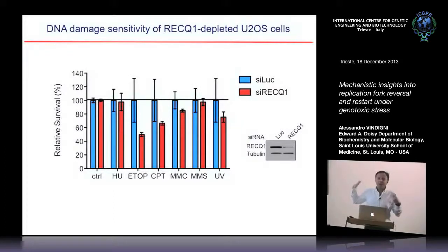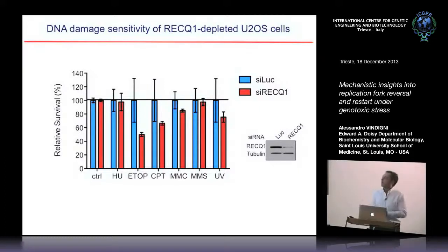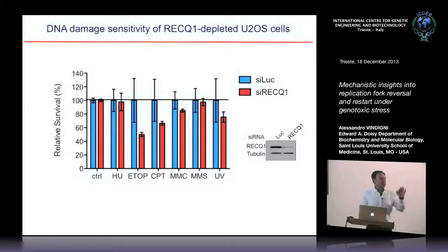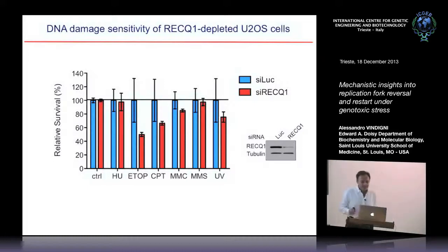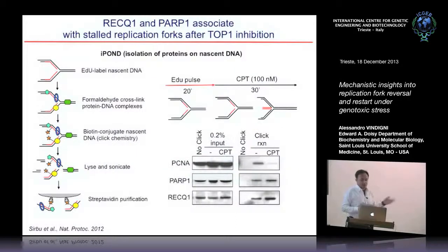An indication that RECQ1 might be the relevant factor came from earlier studies — started by Ramiro and continued by Sasha Koenig — showing that RECQ1-depleted cells are exquisitely sensitive to treatment with DNA topoisomerase inhibitors, including camptothecin and etoposide, a type 2 topoisomerase inhibitor.